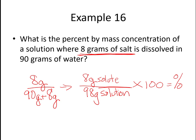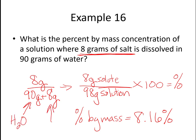So if I work that out, 8 divided by 98 gives me 0.0816. And so I multiply that by 100 and my percent by mass will equal 8.16%. Once again, that's because I divided my 8 grams of solute by my 98 grams of solution. Because this 90 grams came from our water and this 8 grams came from our salt.